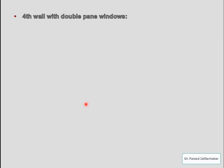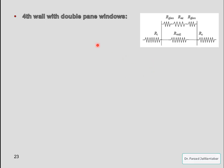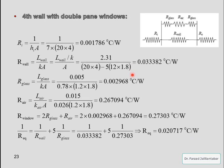Now let's look at heat transfer through the wall with double pane windows. The diagram shows that the convective heat transfer between the wall's internal surface and the inside of the house, and between the outer surface and the environment, is similar to the other walls. The difference is in the middle part: we have conductive heat transfer through the wall, then through the first glass, then through the stagnant air between the two glasses, and then through the second glass. We need to account for additional thermal resistances using the thermal resistance concept.